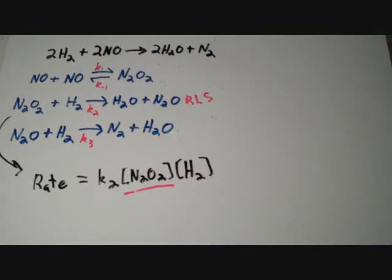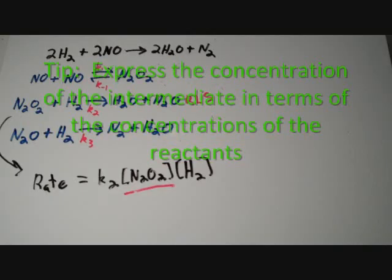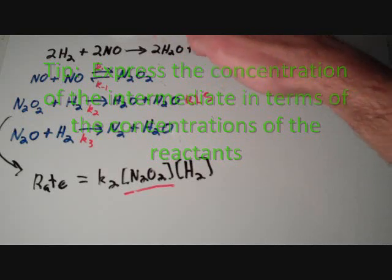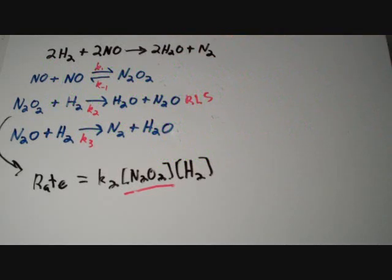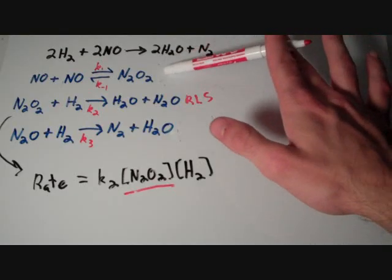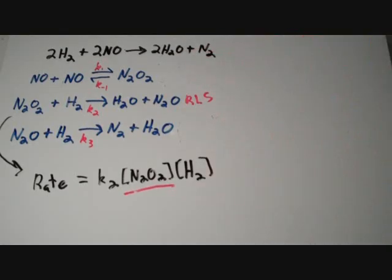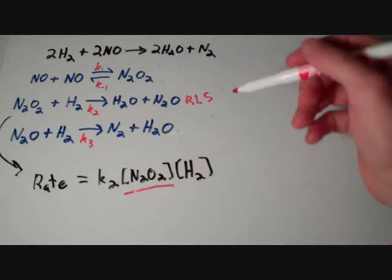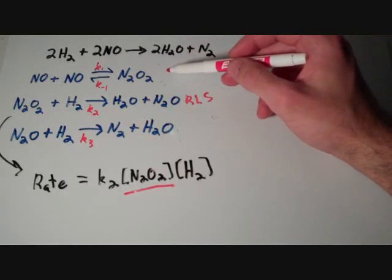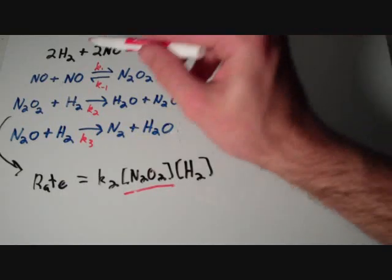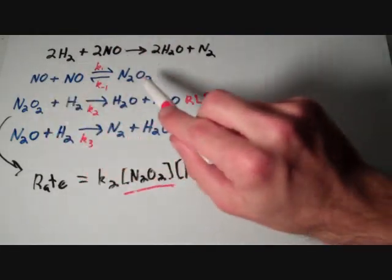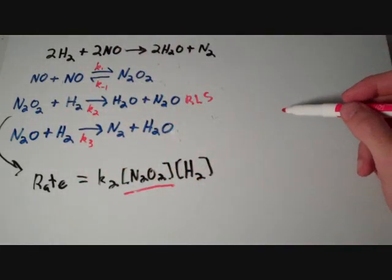So, what we need to do now is we need to express the concentration of the intermediate in terms of the concentrations of the reactants. And basically what it boils down to is we're going to use the first step equilibrium to our advantage. So, let's turn our attention to the first step of the reaction. The first step of the reaction says that the left-hand side is in equilibrium with the right-hand side. What does that mean?